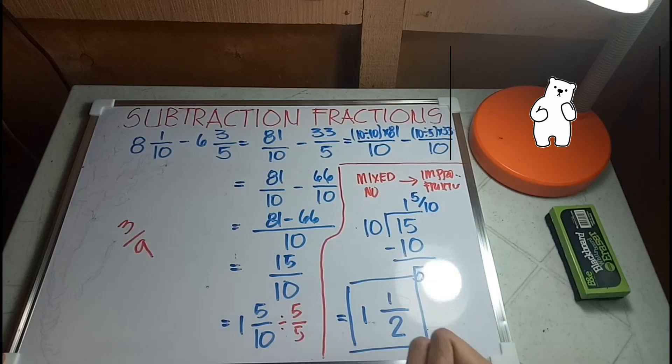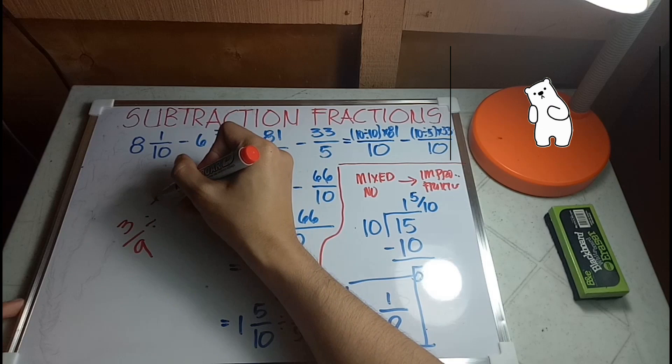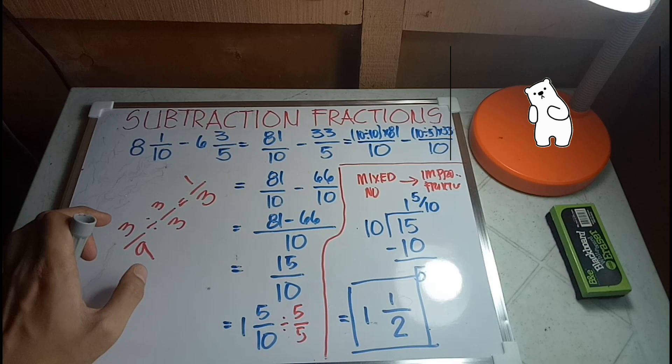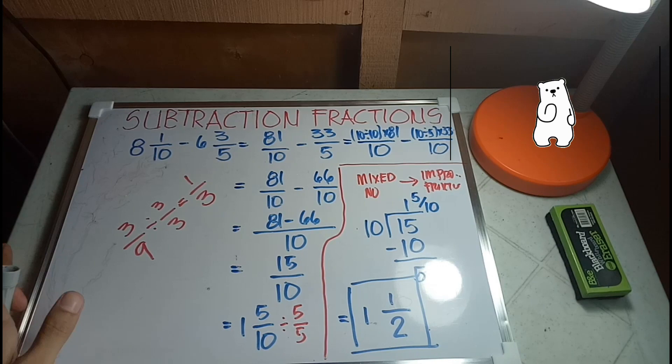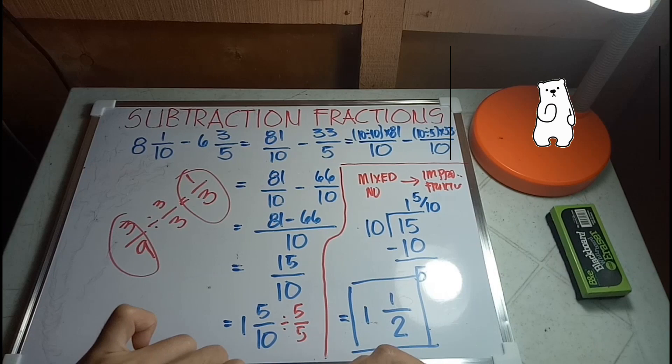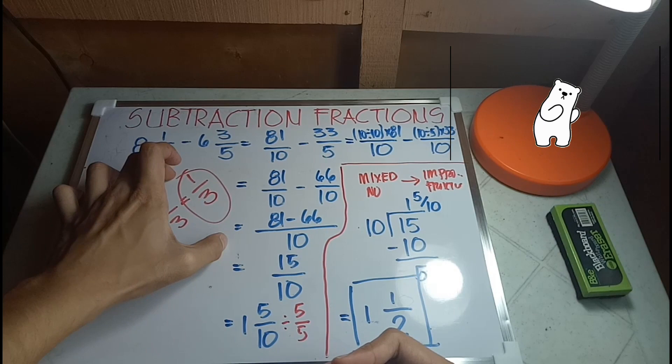For example, if we have 3 over 9, these 2 numbers have a commonality of 3. So what we will do is divide both sides by 3, which will give us an answer of 1 over 3. If you divide 3 divided by 9, you'll get a decimal. If you divide 1 over 3, you'll get the same decimal. They're equal, the only difference is we converted this fraction into a much more lesser value, but they're equal.